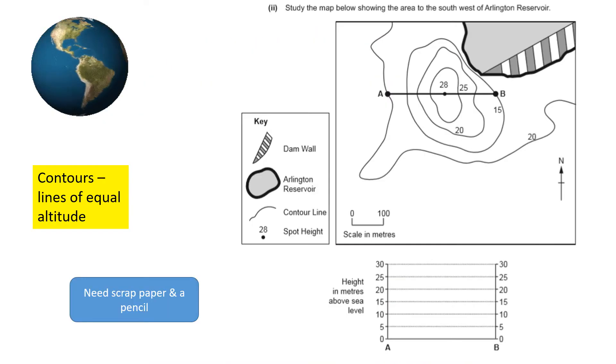Here we have a typical map from an exam asking us to draw the cross profile from A to B in the chart directly below the map. In order to do this you need a scrap piece of paper and a pencil.